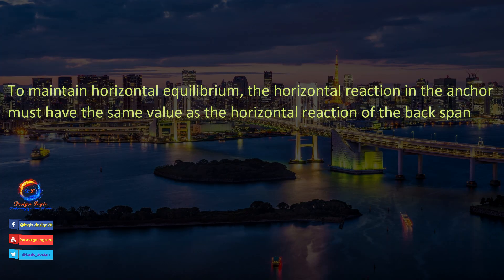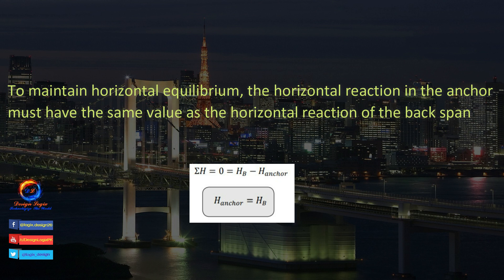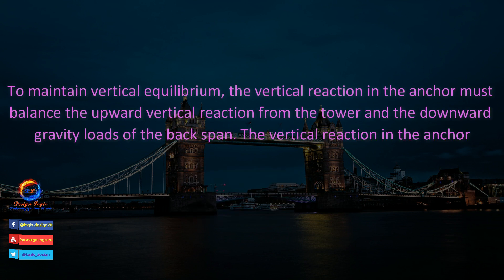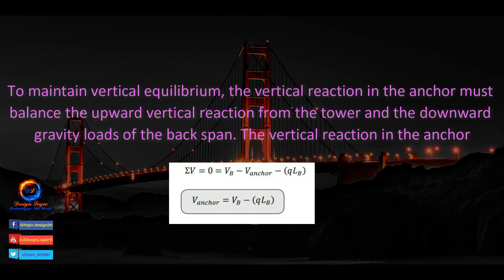To maintain horizontal equilibrium, the horizontal reaction in the anchor must have the same value as the back span reaction: ΣH = 0 → Hb − H_anchor = 0, so H_anchor = Hb. To maintain vertical equilibrium, the vertical reaction in the anchor must balance the upward vertical reaction from the tower and the downward gravity loads of the back span: ΣV = 0 → Vb − V_anchor − q·Lb = 0.